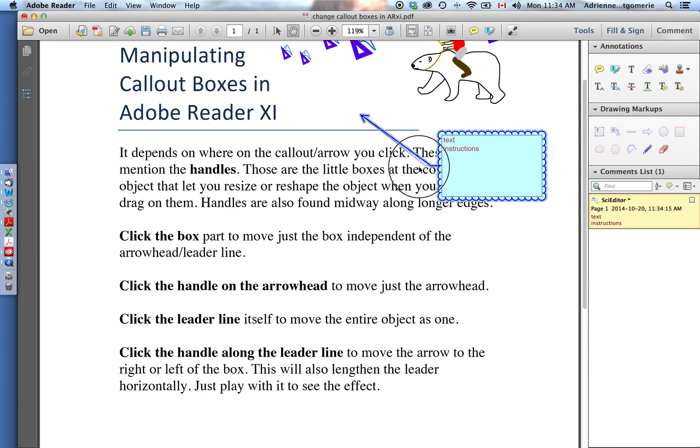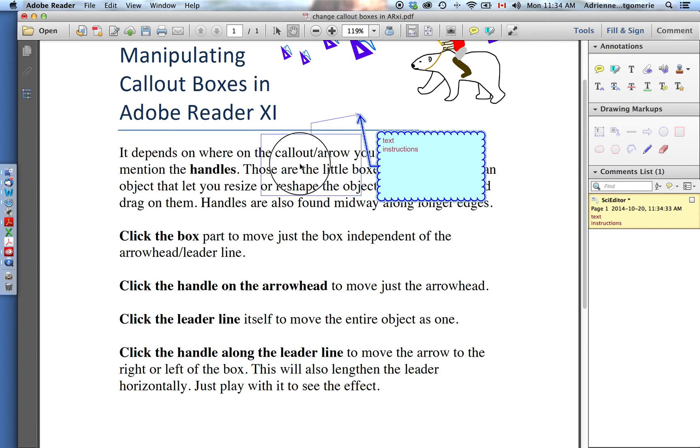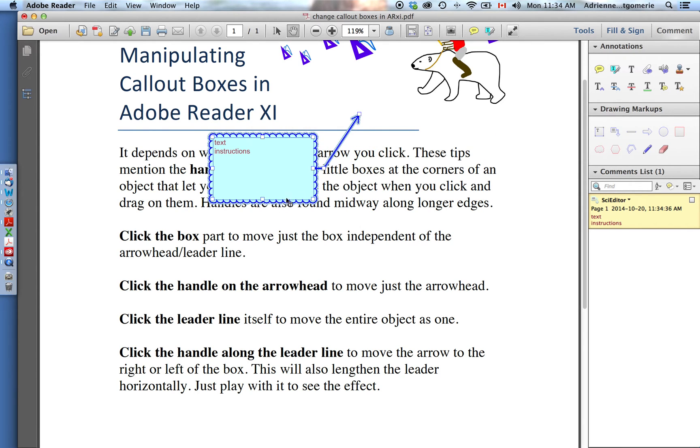This handle in the middle can be used for redirecting your arrow if you want to be precise or not obscure things. It can also change the side of the box that the arrow is on. Sometimes it works, sometimes moving your box to the other side and then repositioning works better.